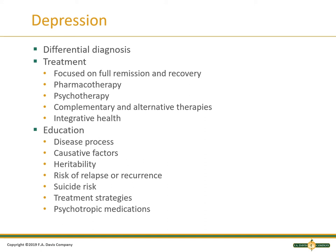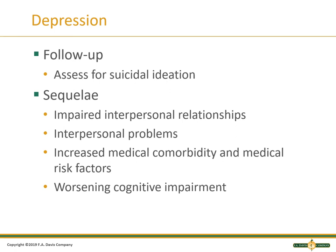Treatment strategies include psychotropic meds when ultimately indicated. Assess for suicidal ideations and make sure they know there's somebody out there — a phone number they can call if they're feeling depressed and want to kill themselves. In the sequela, this is impaired interpersonal relationships — a lot of strain with families, friends, and peers, interpersonal problems, battling with themselves. This then increases their medical comorbidities, chronic medical conditions, risk factors go up, and cognitive impairment further progresses.